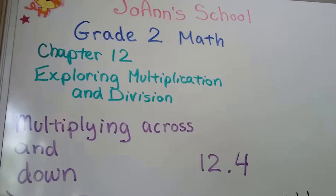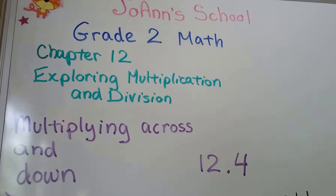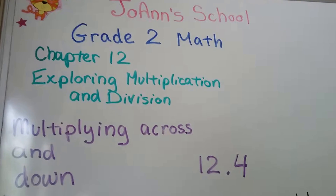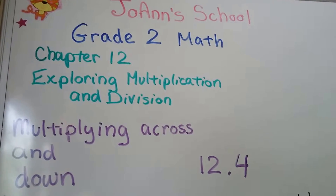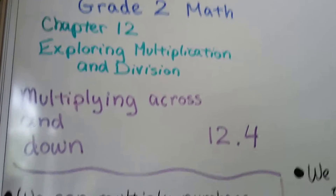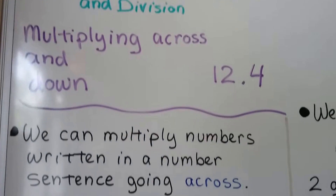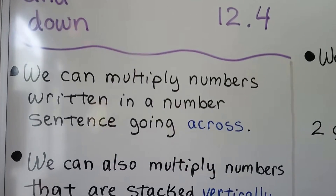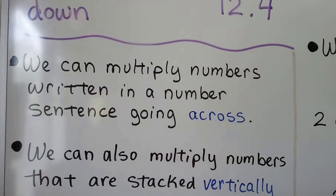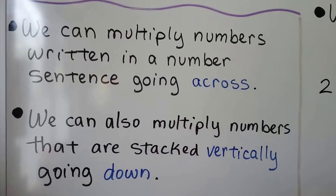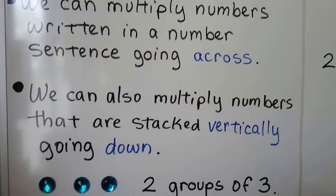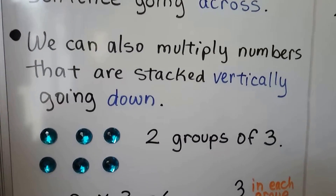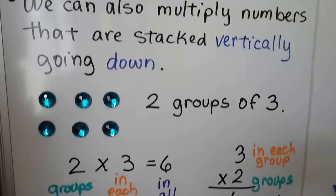We're going to be learning about multiplying across and down. This is lesson 12.4. We can multiply numbers written in a number sentence going across. We can also multiply numbers that are stacked vertically going down.